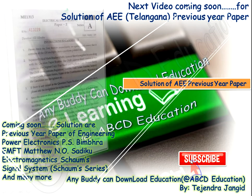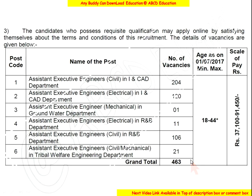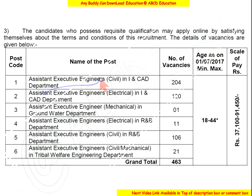About the post of Assistant Executive Engineer, there are 120 plus 11 posts. This is the Roads and Buildings department and the Irrigation and CAD departments. The salary is very huge — in a scale of 37,000 to 91,000 approximately.